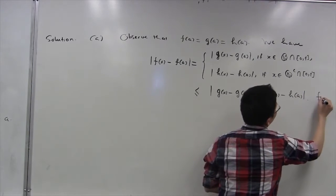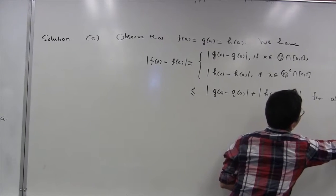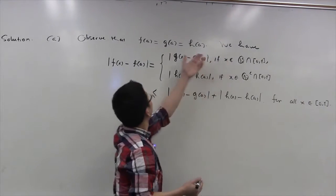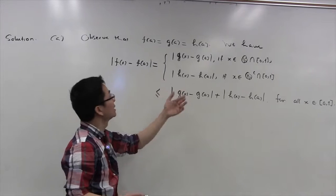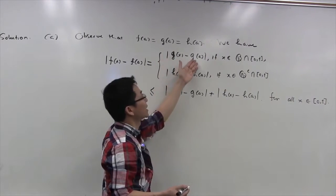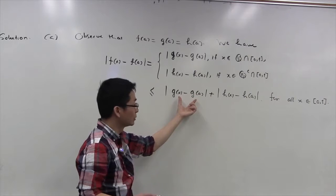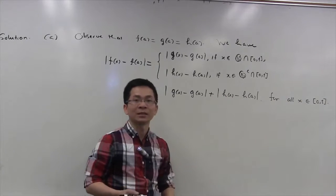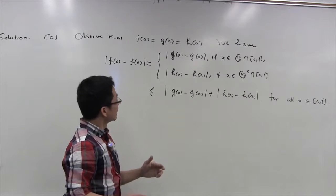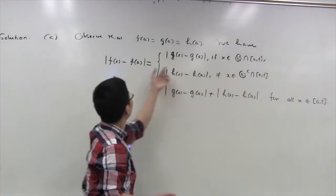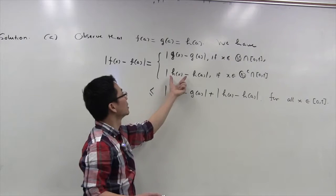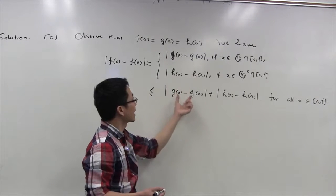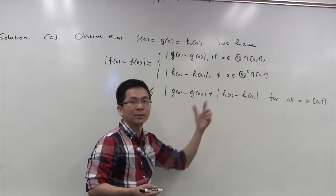This estimate holds for all x in [0,1]. Indeed, if x is a rational number, then |f(x) - f(a)| equals |g(x) - g(a)|, which is certainly less than or equal to |g(x) - g(a)| plus |h(x) - h(a)|. In the case where x is an irrational number, this absolute value equals |h(x) - h(a)|, and similarly it is less than the sum of both terms.